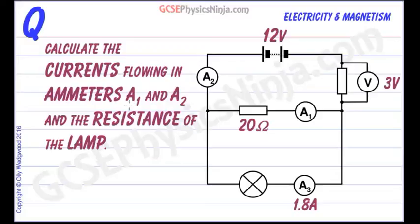Calculate the currents flowing in ammeters A1 and A2, here and here, and calculate the resistance of the lamp down here.